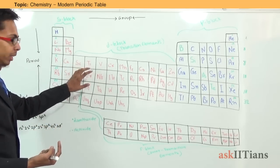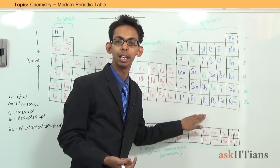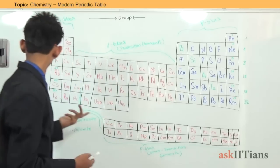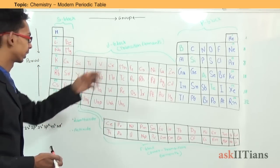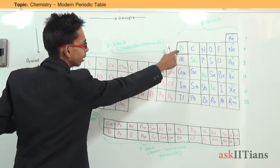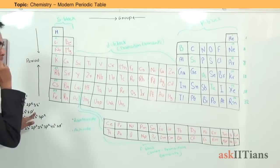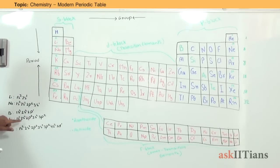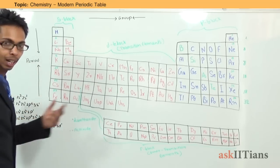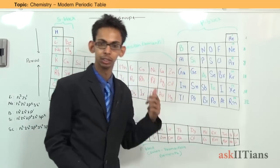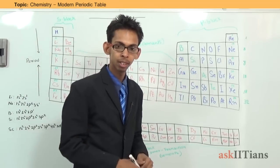In P block elements, the last electron enters the P subshell. For example, boron has the electronic configuration 1s2, 2s2, 2p1 — the last electron enters the P subshell, so boron is a P block element. Similarly, silicon has the configuration 1s2, 2s2, 2p6, 3s2, 3p2 — last electron enters P subshell, making it a P block element. This was the classification based on electronic configuration.